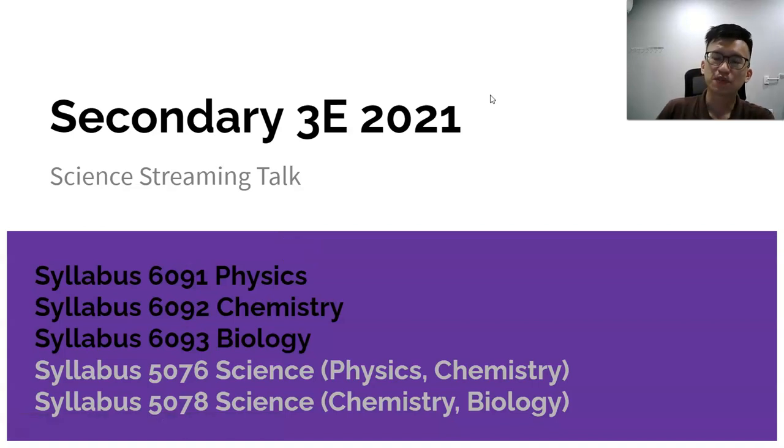Good day to everyone. This video is going to give you a quick introduction to the different science combinations that will be offered to you when you enter Sec 3 in 2021. In Bukit Panjang, we offer three pure sciences: physics, chemistry, and biology. We also offer a combined science of physics and chemistry or chemistry and biology.